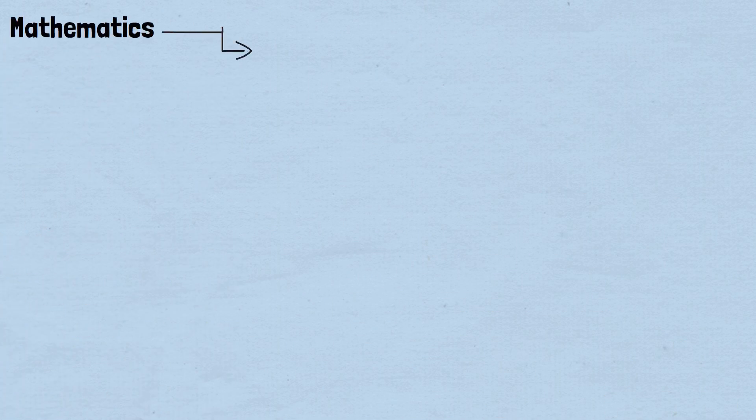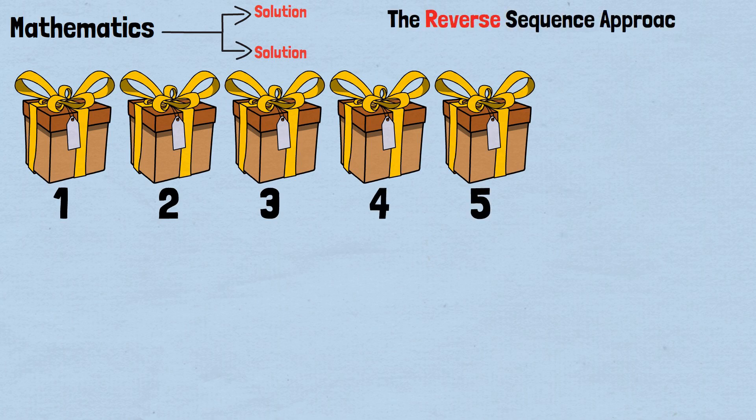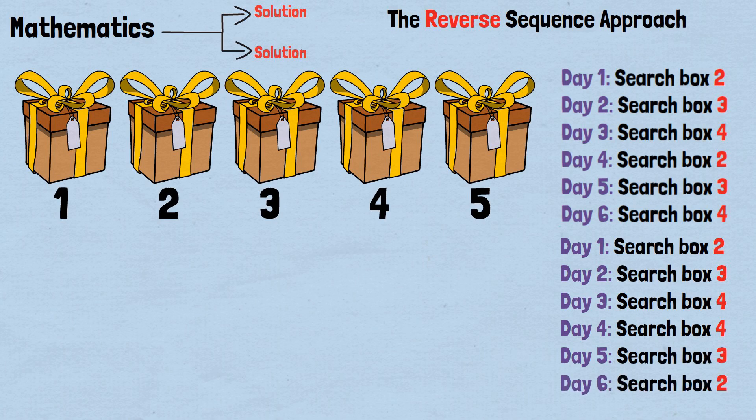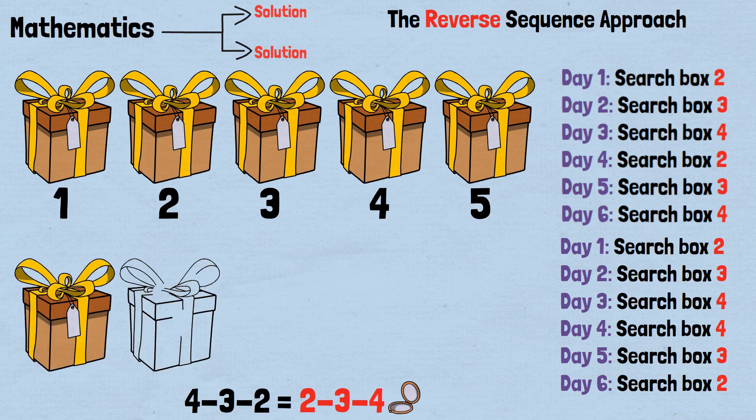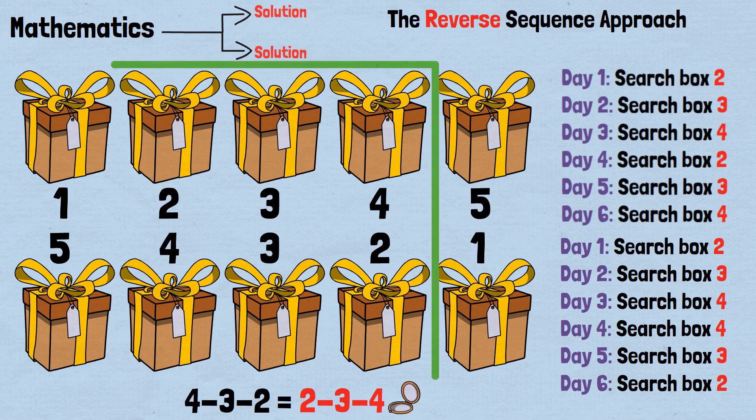Mathematics often reveals multiple paths to the same solution, and this problem is no exception. The symmetry of the box arrangement gives us several equivalent strategies. The reverse sequence approach: Instead of repeating 2, 3, 4 twice, we can use the sequence 2-3-4, followed by 4-3-2. This works because the sequence 4-3-2 is mathematically equivalent to 2-3-4, just mirrored. Imagine flipping the entire box arrangement. What was box 1 becomes box 5, box 2 becomes box 4, and so on.